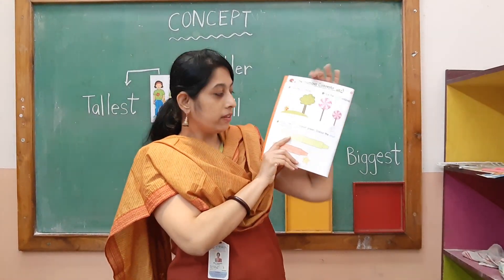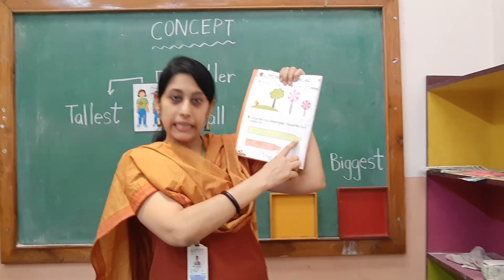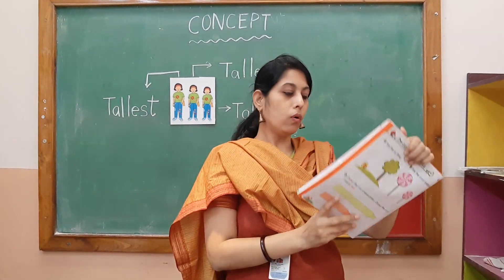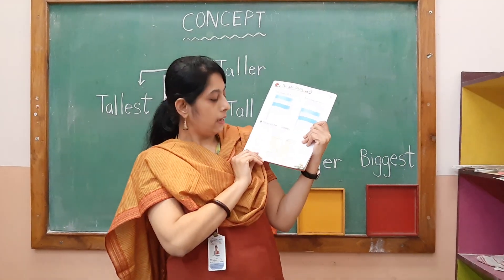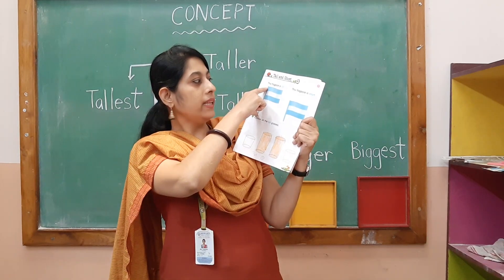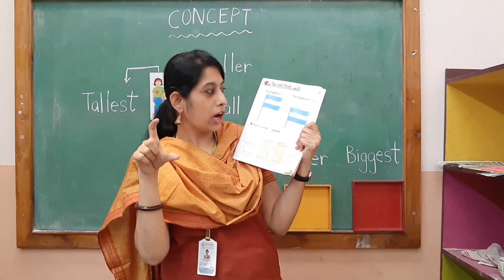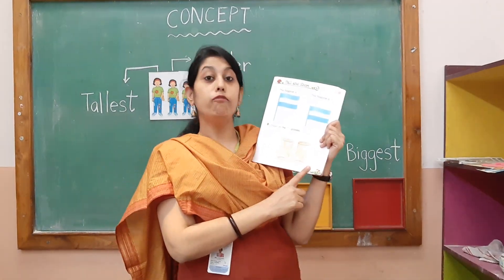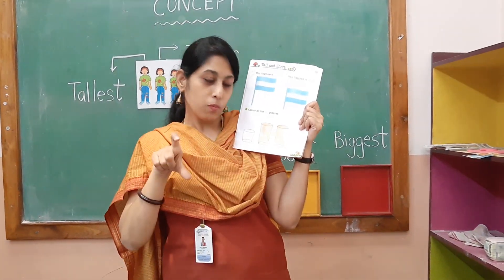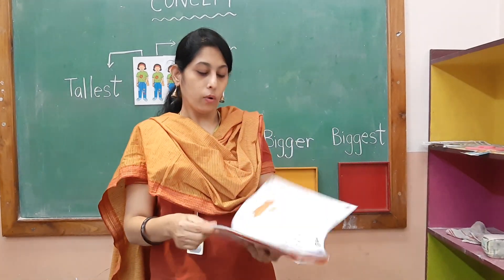Here you can find two different crayons. You need to colour the long crayon with green colour and the short crayon with red colour. On page number 7, this flag has a big pole which is tall, and this flag has a short pole. Here you can see four different glasses — two glasses are tall and two glasses are small. You need to colour the two tall glasses.